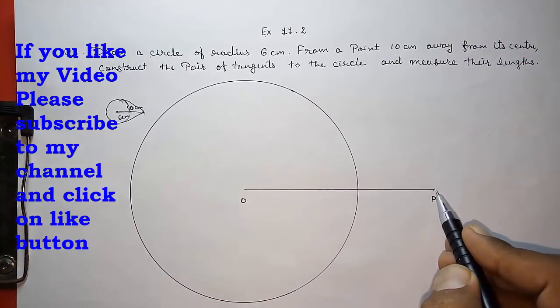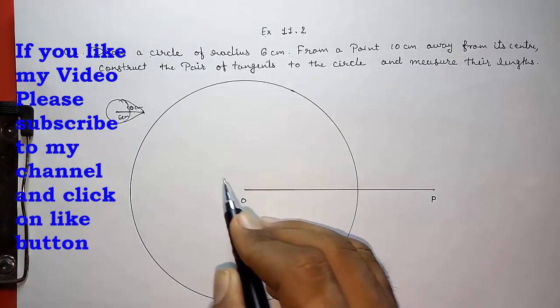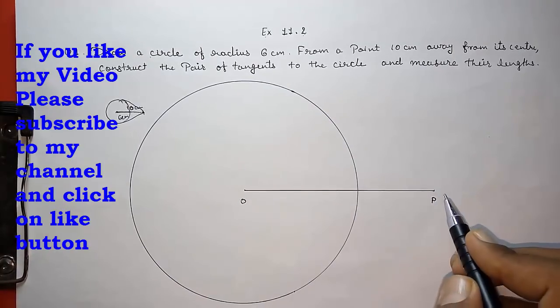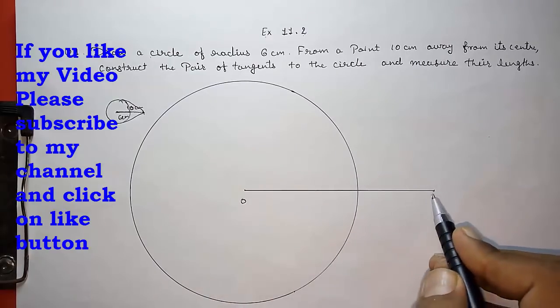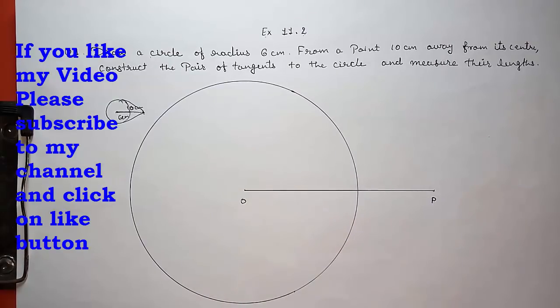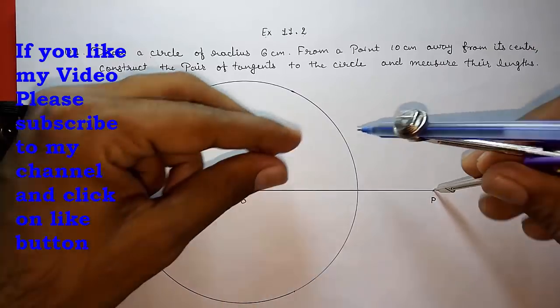Now from this point P we have to draw two tangents intersecting this circle. So how can we draw? First we are going to find the midpoint of OP. And you know how to find the midpoint of OP.